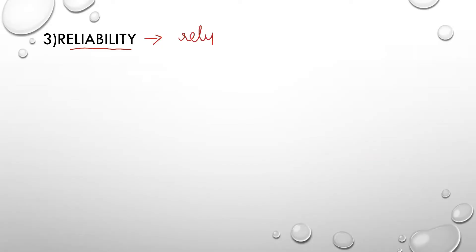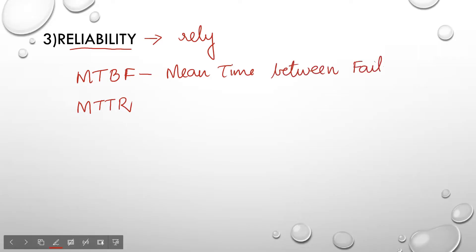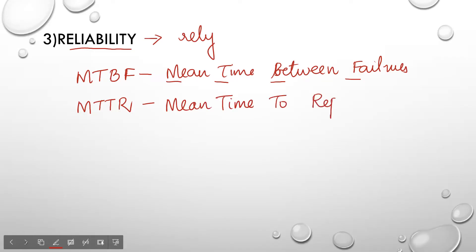From the word itself you can understand: reliability means how much you can rely on the system you have developed — how much you can rely on the proper working of the system. There are two terms used to measure reliability: one is MTBF (mean time between failures) and the other is MTTR (mean time to repair).